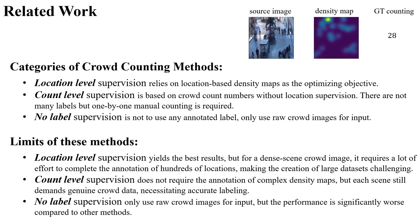Currently, deep learning-based methods are primarily supervised at three levels: location level, count level, and no label. Location level supervision relies on location-based density maps. However, constructing density maps requires a significant amount of effort, making it challenging to build large-scale data sets.